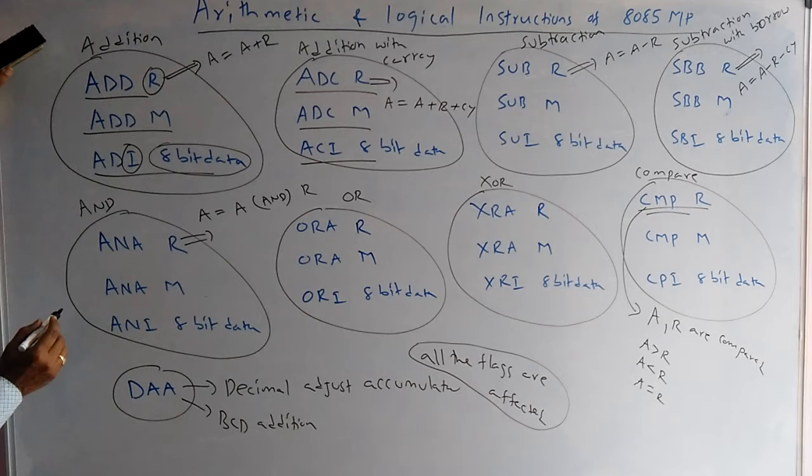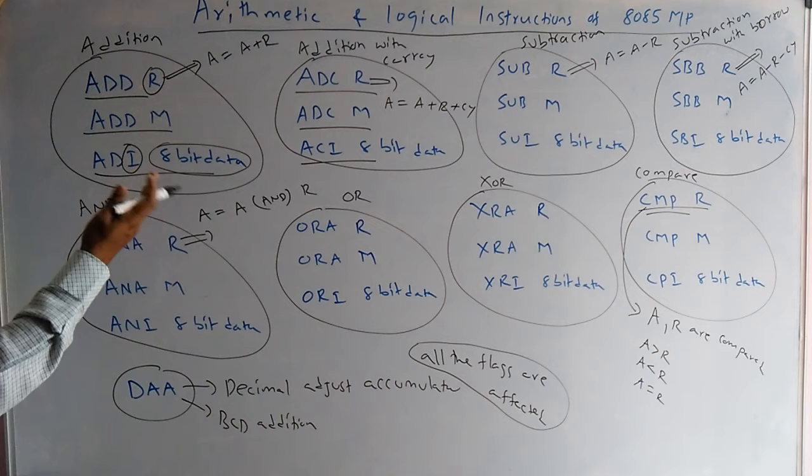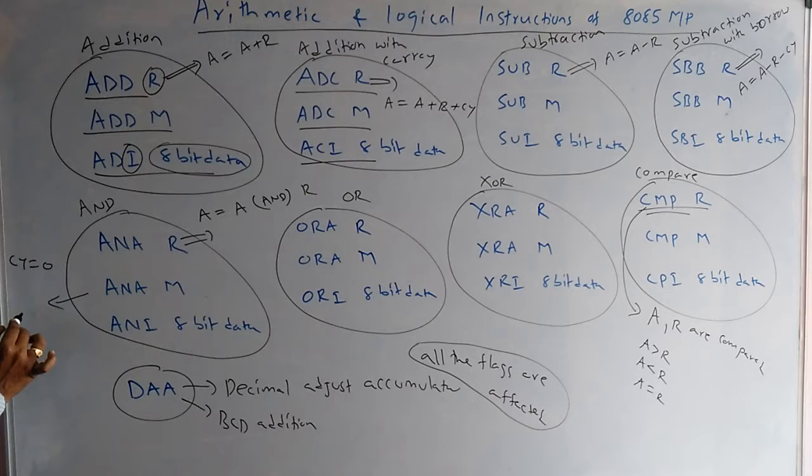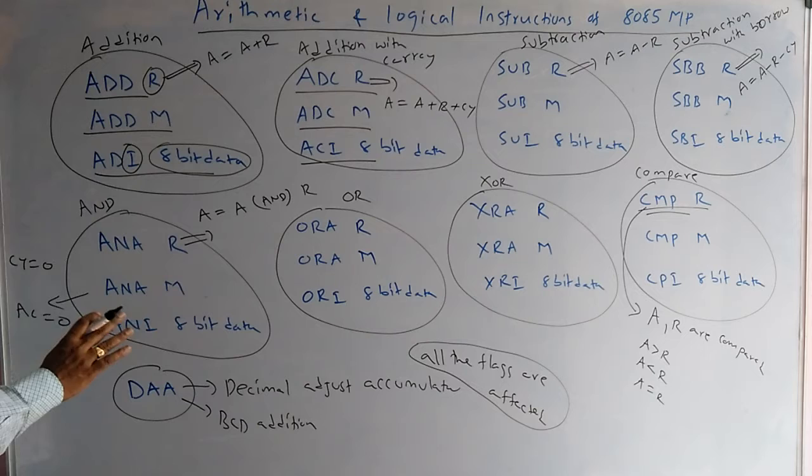One more important point is about the AND instruction. In add or subtract operations, carry and auxiliary carry will be generated. But in AND, OR, XOR instructions, there is no auxiliary carry and carry flag generated normally — they are fixed. In the 8085, whenever we AND, carry will always be zero, and auxiliary carry will also be fixed.